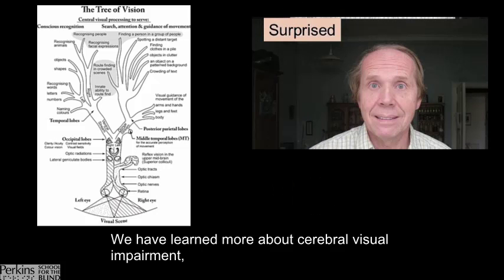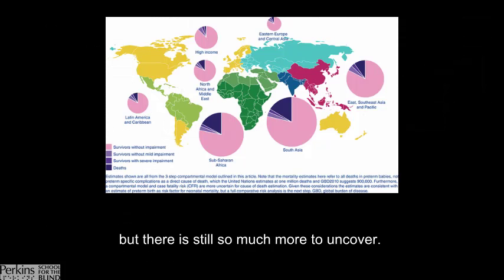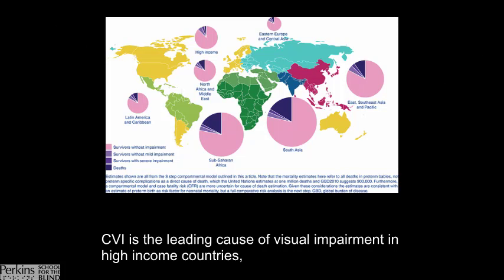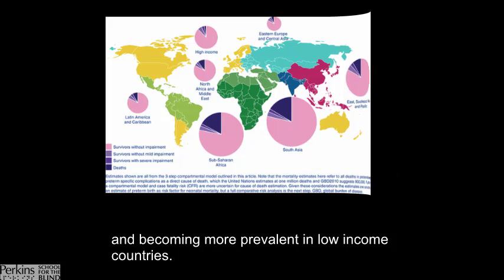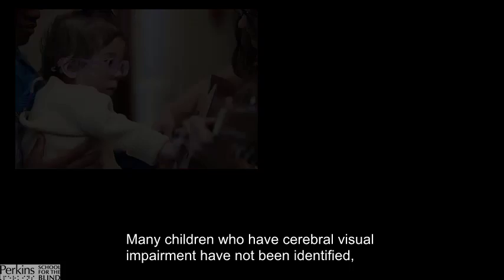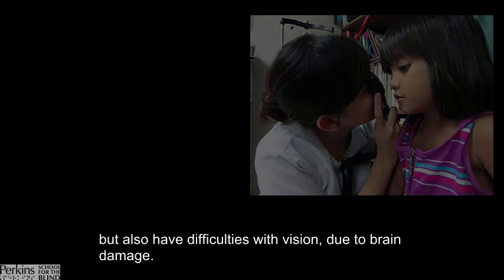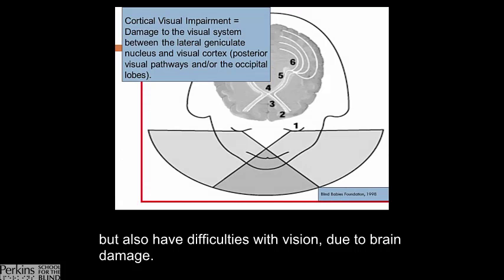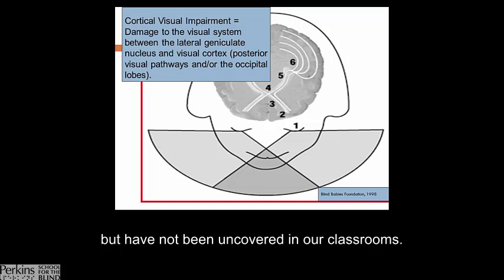We have learned more about cerebral visual impairment, but there is still so much more to uncover. CVI is the leading cause of visual impairment in high-income countries and is becoming more prevalent in low-income countries. Many children who have cerebral visual impairment have not been identified — including children who have normal to near-normal visual acuities but have difficulties with vision due to brain damage, and also children with multiple disabilities who have cerebral visual impairment but have not been uncovered in the classrooms.